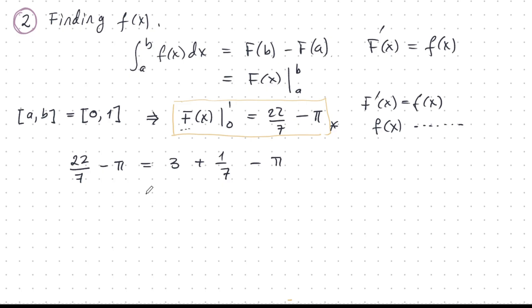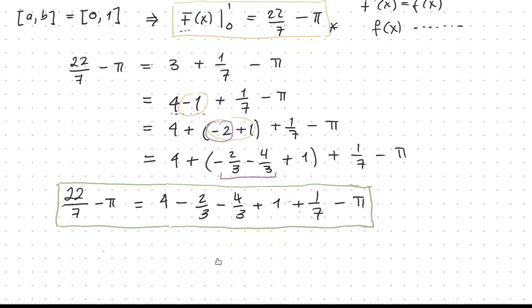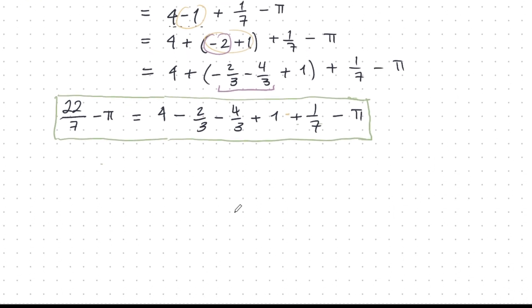We can start by decomposing the 22 over 7 like this. Now the 3, I can write as 4 minus 1. And this minus 1, I can write as minus 2 plus 1. And now I take this minus 2, and I can write the minus 2 as this sum of 2 terms. That's very nice. This is my starting point.